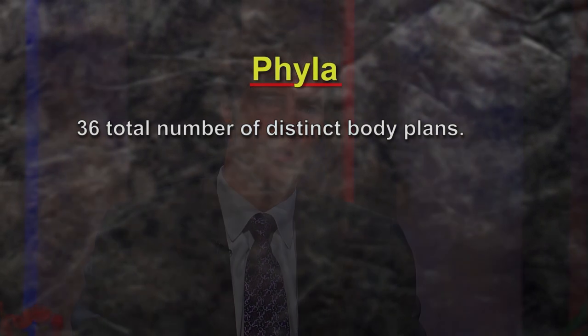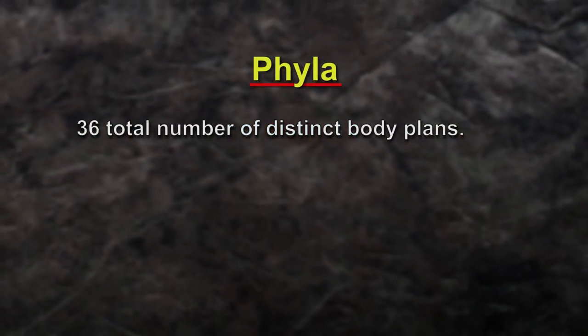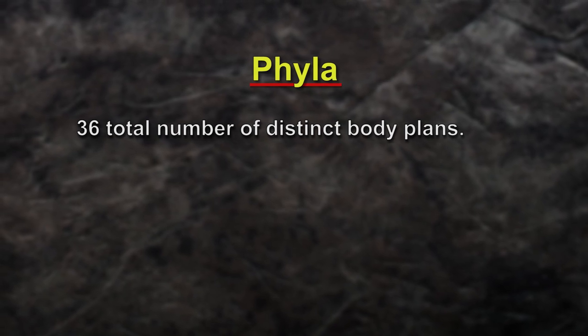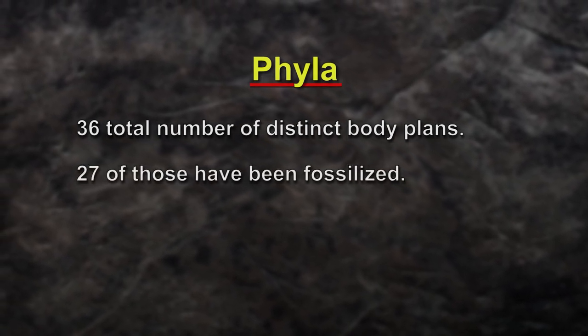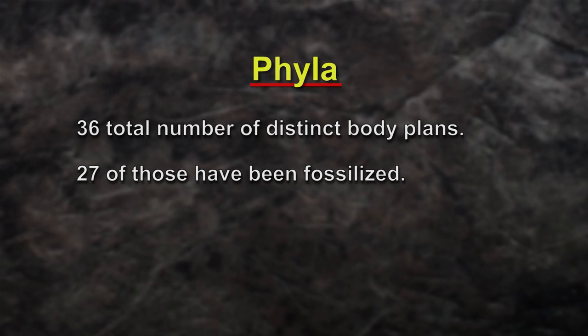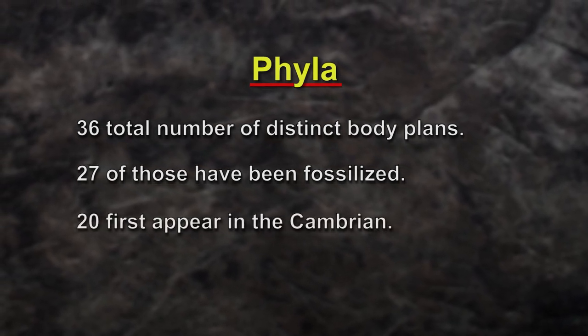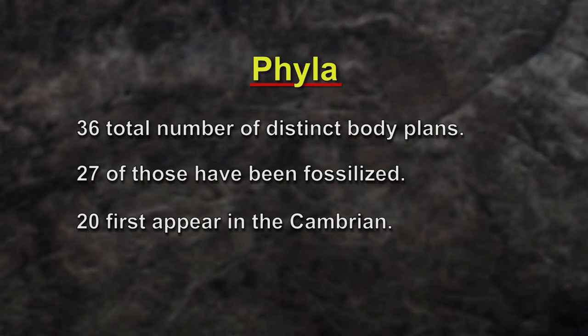How many of the phyla — the big ones — just appear in the Cambrian explosion? Well, there are about 36 phyla, which is a pretty good estimate of the total number of distinct body plans in the animal kingdom. About 27 of those have been fossilized. Of the 27 fossilized forms, 20 first appear in the Cambrian. There are roughly three that occur a little bit earlier in the late pre-Cambrian, but they also appear very abruptly. So you have a really striking pattern of discontinuity and abrupt appearance, which is quite contrary to what you'd expect on a Darwinian picture of the history of life.